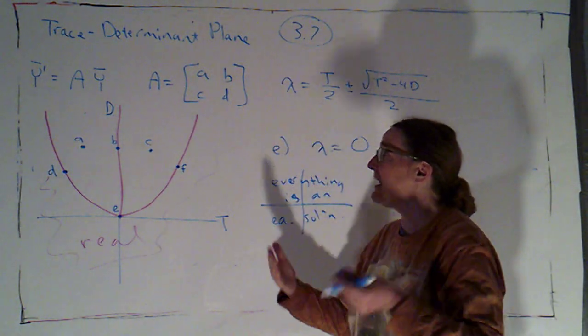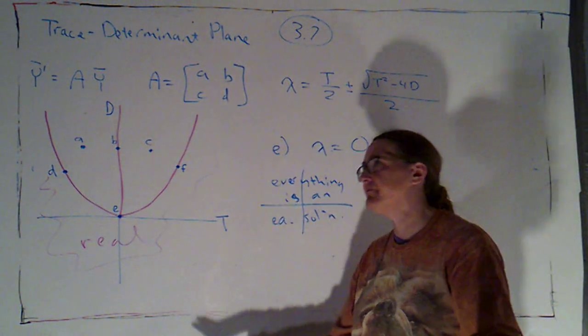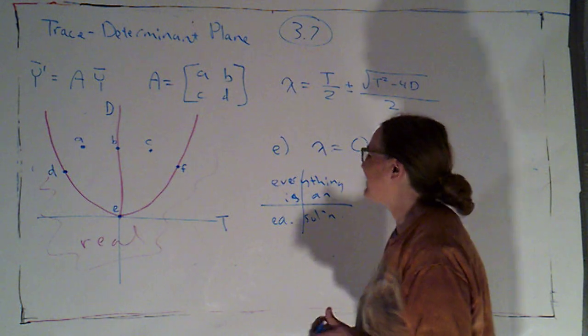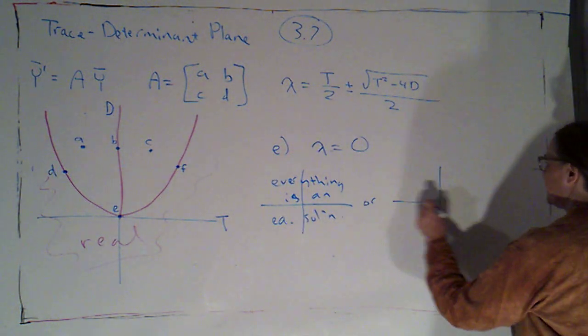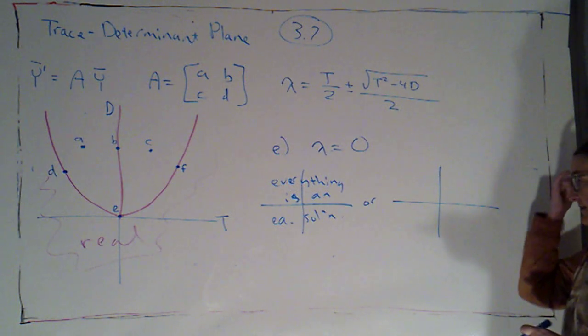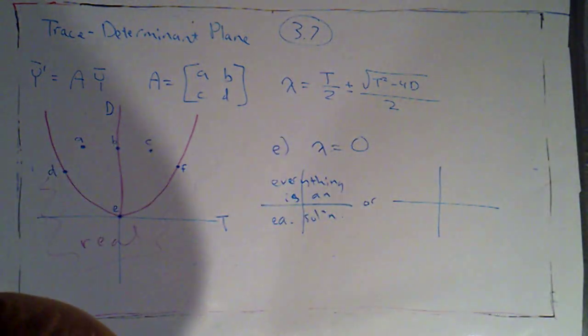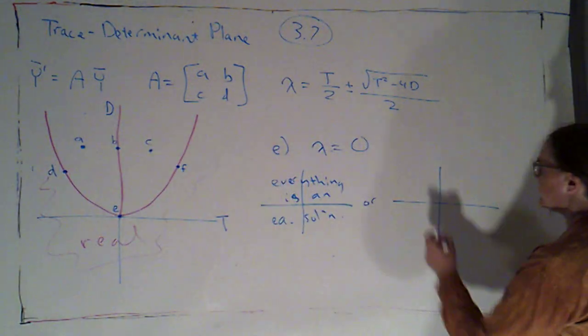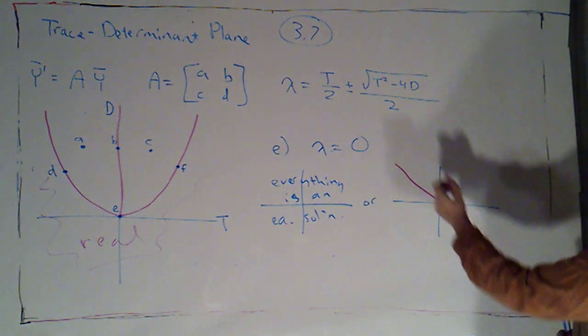Basically, it's saying the derivative is 0, everything's constant. Every constant vector would be a solution. What's more interesting is if I just have one eigenvector that's an equilibrium solution. This time, to make it a little clearer to see, I'm not going to make that on the x-axis. Let's just say this was my line of equilibrium solutions.